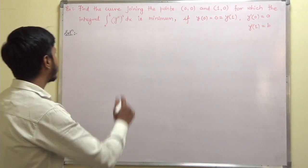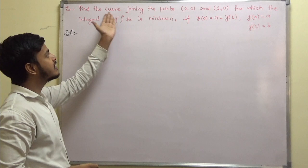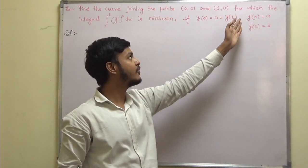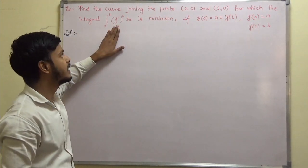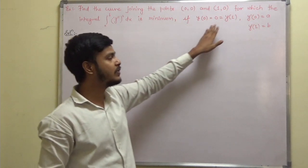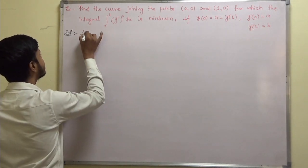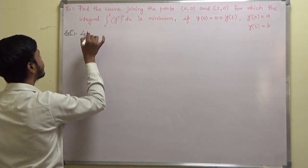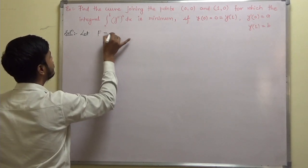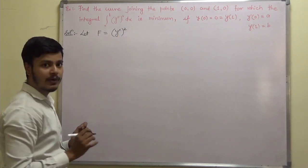We are given the problem: find the curve joining the points (0,0) and (1,0) for which this integral is minimum, and also some conditions are given. The first step in solving such cases is to write down f equal to y-double-dash squared.